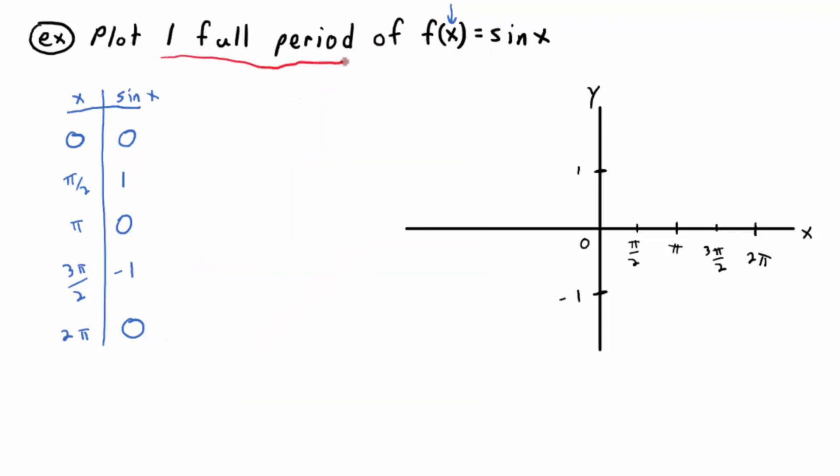Right now we're graphing one full period. I'm just plotting these points: (0, 0), (π/2, 1), (π, 0), (3π/2, -1), and then (2π, 0). You can see the sine wave start to form, and you guys know from previous experience that if you just connect the dots in a nice smooth curve, you'll get one cycle of the sine function, one period of the sine function.